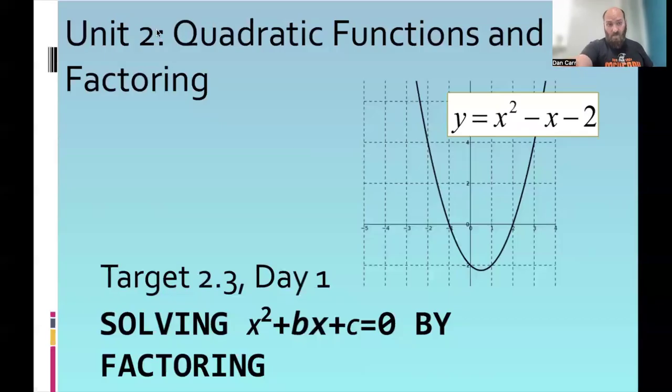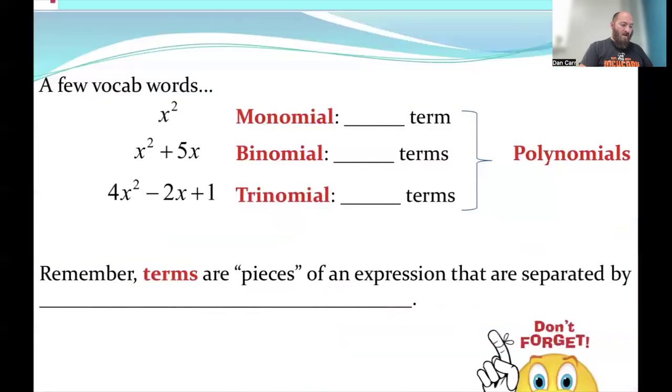Hey everybody, it's Mr. Carr again. Today we're going to be looking at 2.3 day one. The goal today is to solve a quadratic equal to zero by using factoring. So here's an example of a quadratic real quick. The goal with factoring, I want to find these points right here. We're trying to find where it crosses the x-axis is the idea. So that's what we're going to find here.